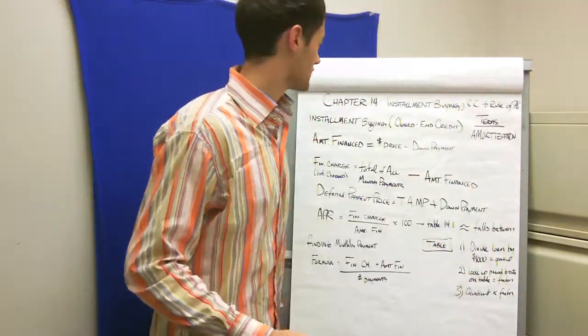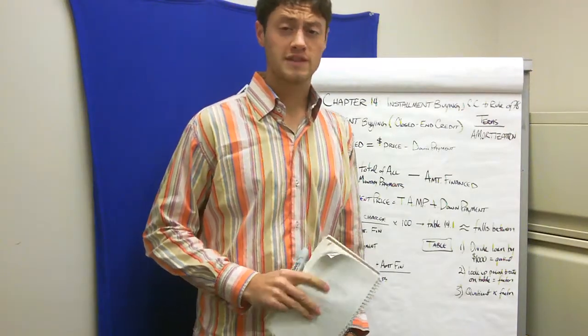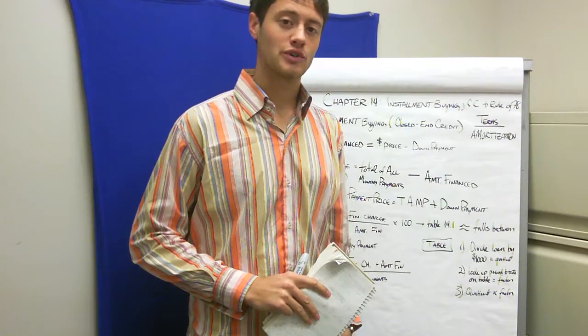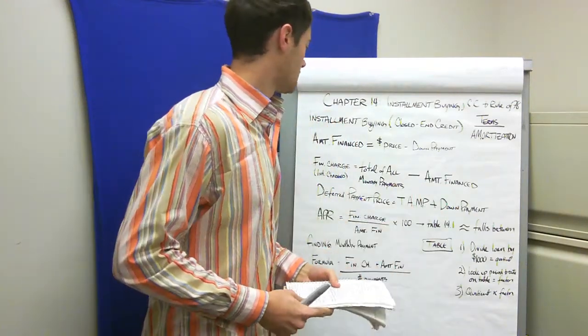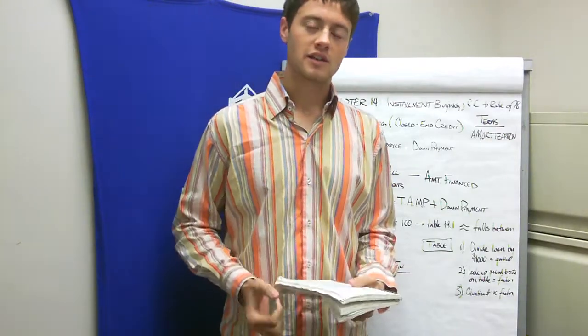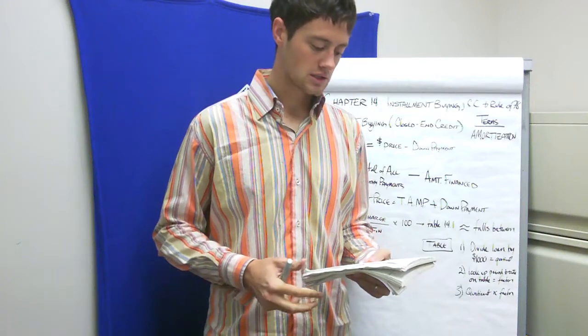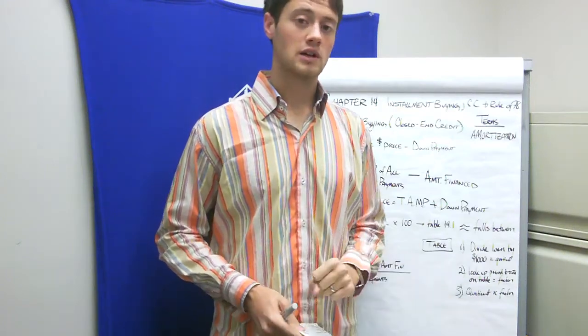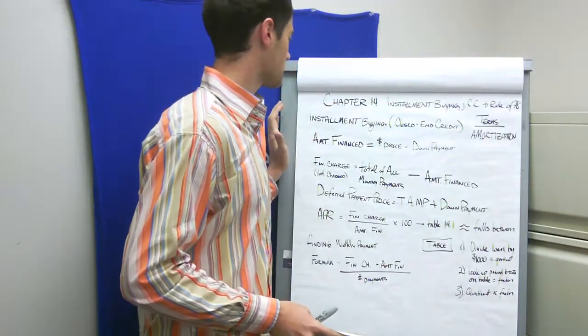Good afternoon and thank you for tuning in. Today we're going to look at chapter 14, installment buying rule of 78 as well as credit cards or revolving charge cards. Obviously there are a lot of terms you'll need to know such as down payment, amortization, installment loan. Make sure you're familiar with those. Let's hit some of the main topics in this chapter.